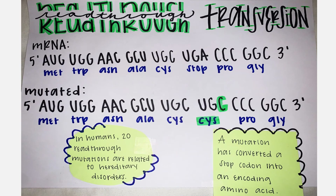Read-through mutations convert a stop codon into an encoding amino acid. In this example, the purine adenine in our stop codon is changed to a pyrimidine cytosine nucleotide. This codon sequence changes the stop codon to a cysteine codon due to the codon's tendency to code for different amino acids. This will elongate the amino acid chain until another stop codon is present.